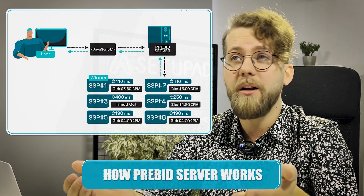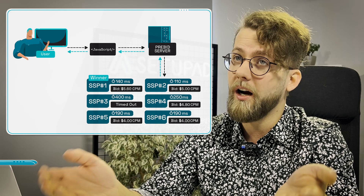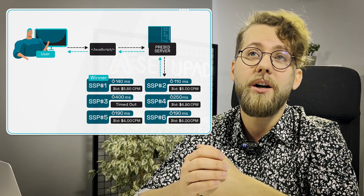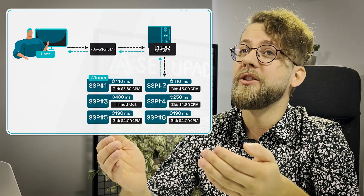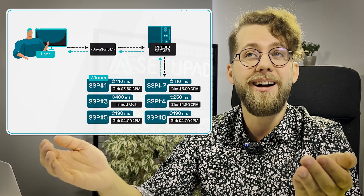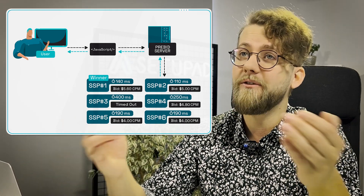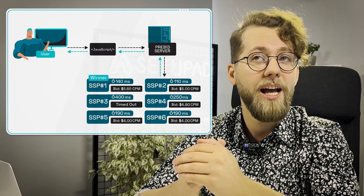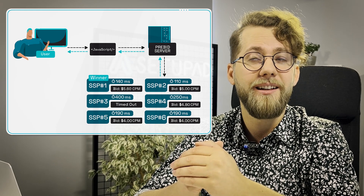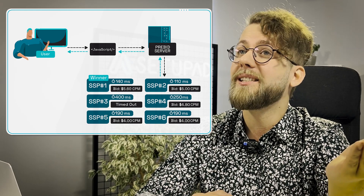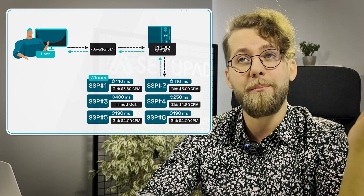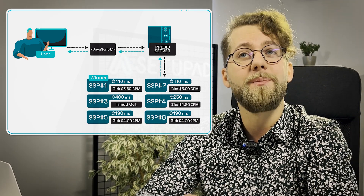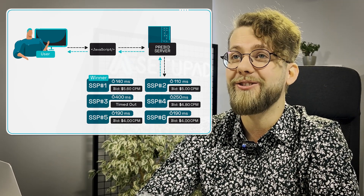After deciding on bidders, the Prebid server contacts demand partners, returns winning bids to the client, and forwards them to the ad server. The highest bid is selected and the Prebid wrapper displays the winning ad creative.